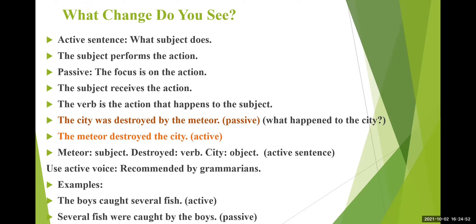Jo aapki formal writing hoti hai, or informal bhi, it is normally recommended by grammarians and writers in English that the best way to convey your message in a clear and concise way is that you should use active voice. In your writing, always start your sentence with a subject, use a proper verb, and if you're using adjectives the adjectives must be strong, the verbs must be strong. Do not start your sentence with words that are unnecessary — for example: there, here, these, those, very, a lot, too much, very much. Yeh words avoid karne hain. You have to start your sentence with a clear subject.